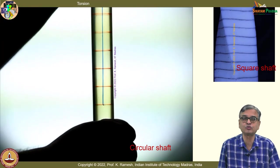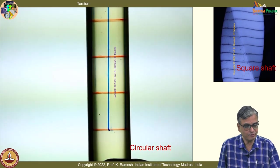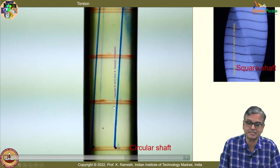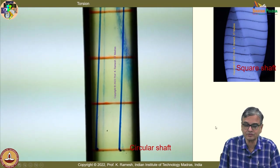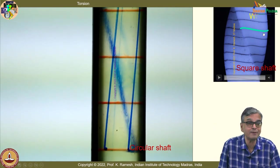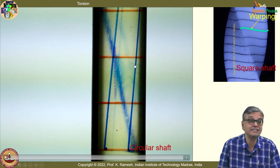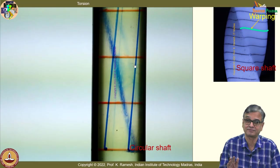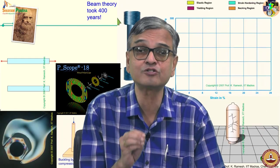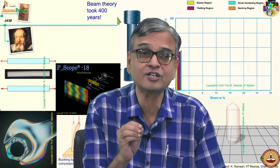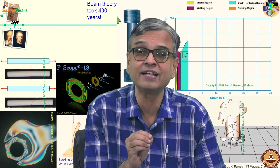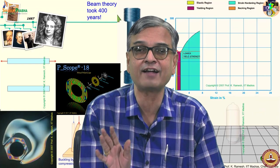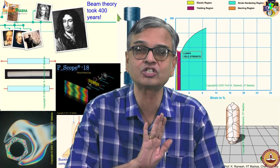Then we moved on to torsion of circular cross sections. To understand circular cross sections in a simplistic manner, we also looked at a square shaft. In a square shaft you have warping, which is absent in a circular shaft — that made life a lot simpler. That is why in this course we choose the cross section and loading so that plane sections remain plane before and after loading.